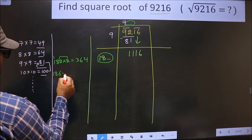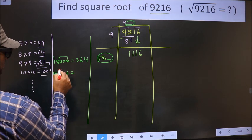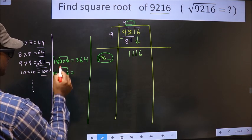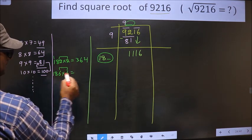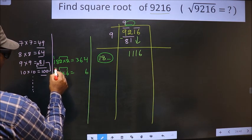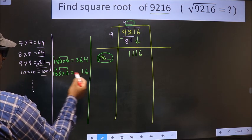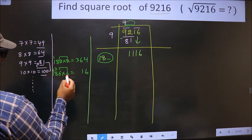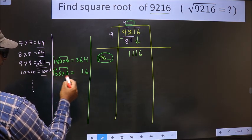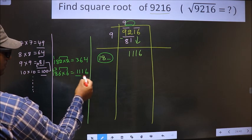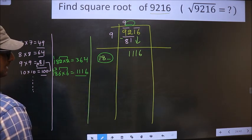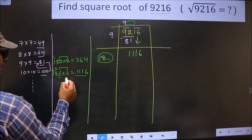So if I take 6, observe, these two should be same. 6 into 6, 36. 6 into 8, 48 plus 3, 51. So 1 here, 5 here. 616 plus 5 is 11. So we got exact 1116 for the number 6.